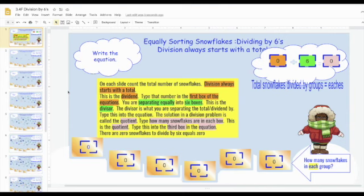So the total snowflakes divided by the different sorting groups, so I have six sorting groups always, is going to equal how many snowflakes are in each group. I just abbreviate that to eaches.